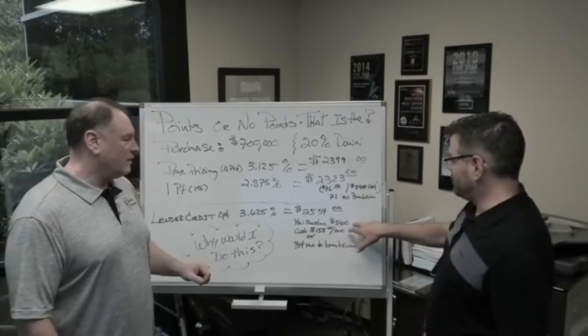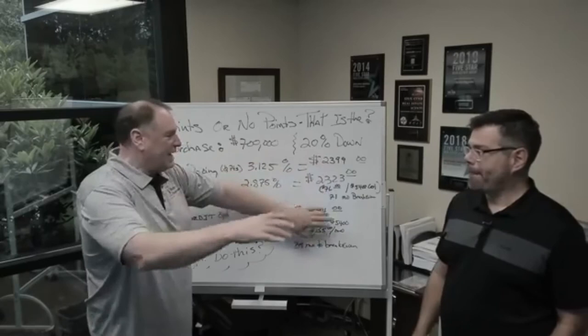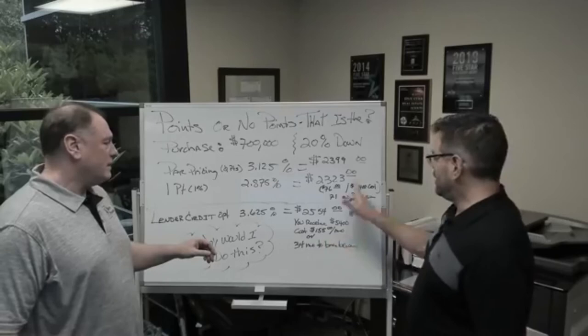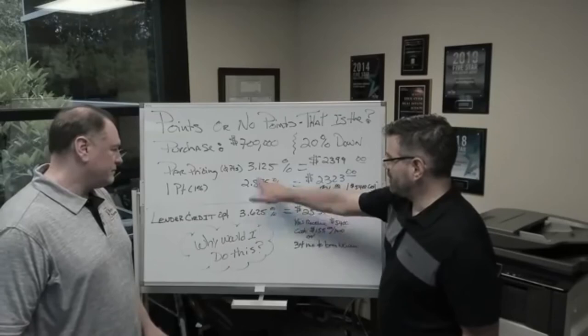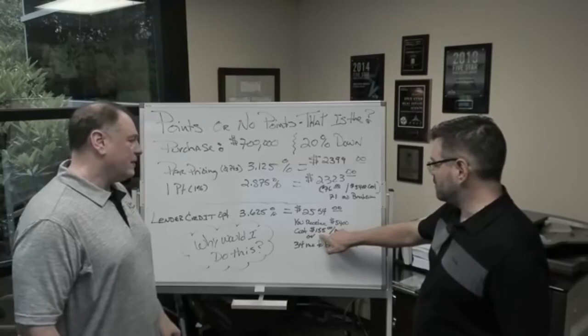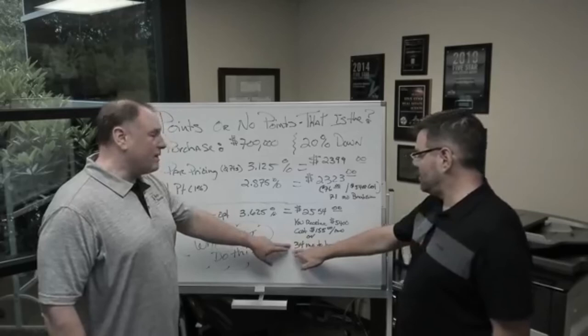There's another reverse scenario I want to talk about: a lender credit option. It's kind of the same idea but in reverse. This is you as the client or the buyer accepting a higher interest rate, and then I give you a lender credit of $5,400. Here you're giving me money for you accepting the higher rate than market, the market rate. I'm paying you to do that: $5,400.